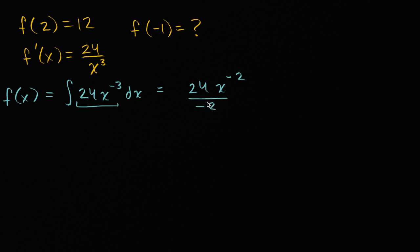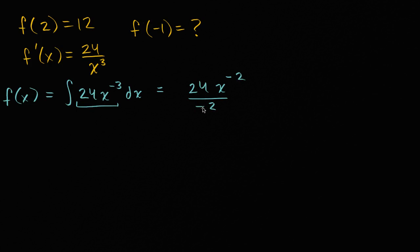If you're in doubt about what we just did — doing the power rule in reverse — take the derivative of this using the power rule. Negative two times 24 over negative two is just going to be 24, and then you decrement the exponent, going back to negative three. That confirms our anti-derivative is correct.